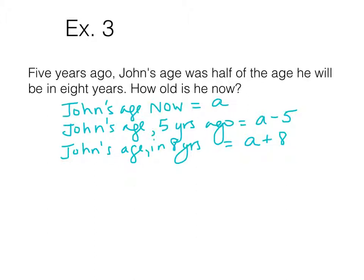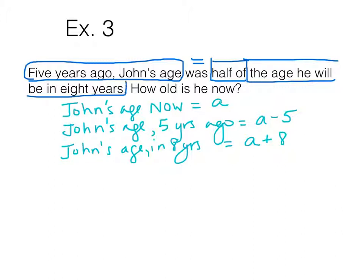So we have our 3 unknowns written. That's actually the easiest part. Now we've got to write the equation. We're going to break this sentence up. 5 years ago, John's age was, is a version of the verb is or to be. That's your equal sign. His age was equal to.